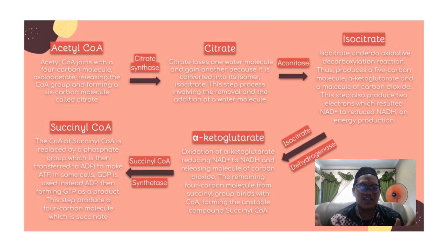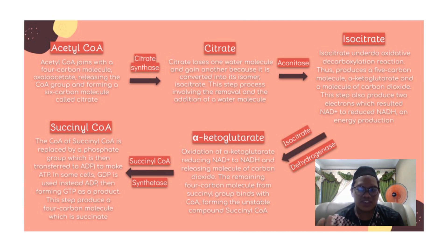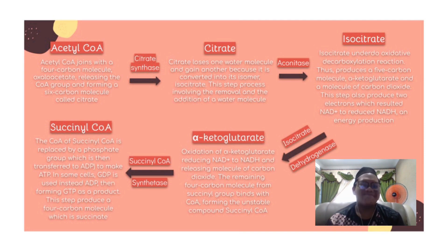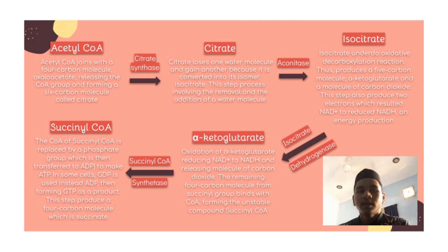In the third step, isocitrate undergoes an oxidative decarboxylation reaction catalyzed by the enzyme isocitrate dehydrogenase, producing a five-carbon molecule, alpha-ketoglutarate, and a molecule of carbon dioxide. This step also produces two electrons which cause NAD+ to be reduced to NADH. The enzyme isocitrate dehydrogenase is important in regulating the speed of the cycle.